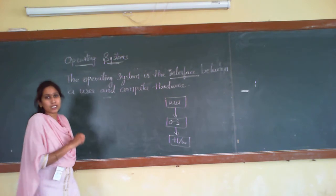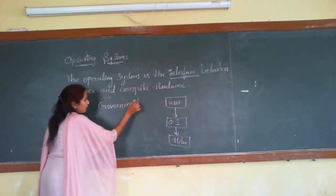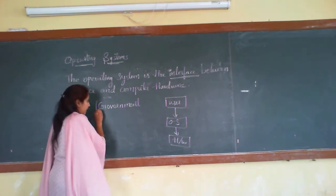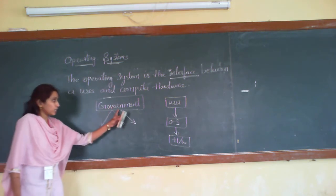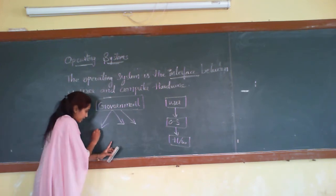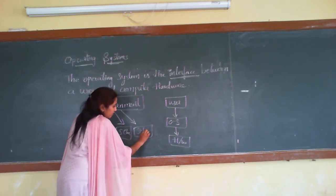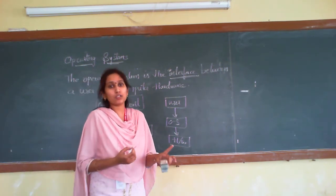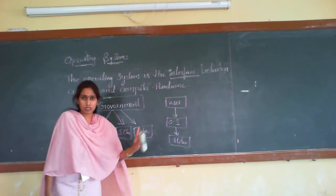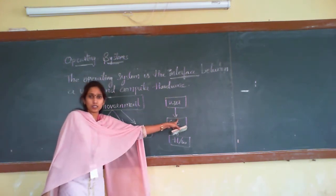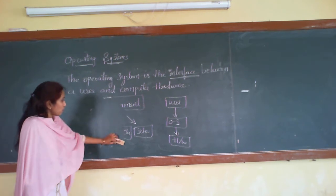Let me take one general example of an operating system. The government is working as an operating system — because based on the government, all the people work based on some rules and regulations. The government acts as an operating system, designing different schemes and structures for education and other areas, acting as an interface between the public and its applications.